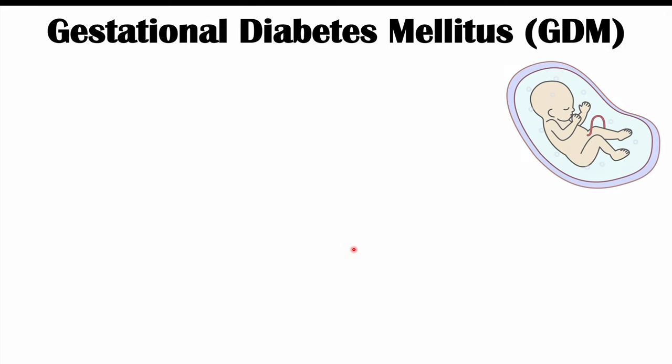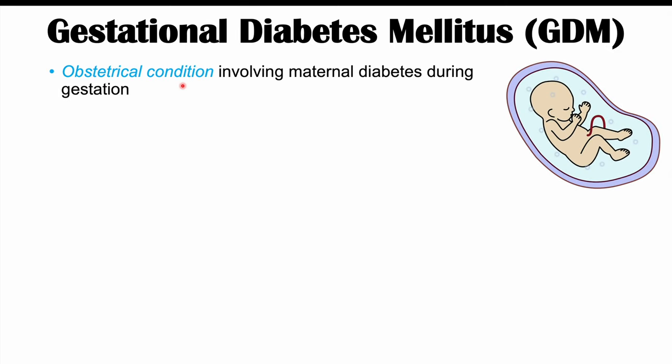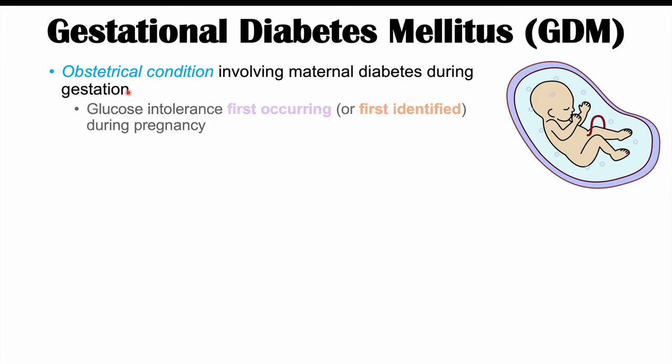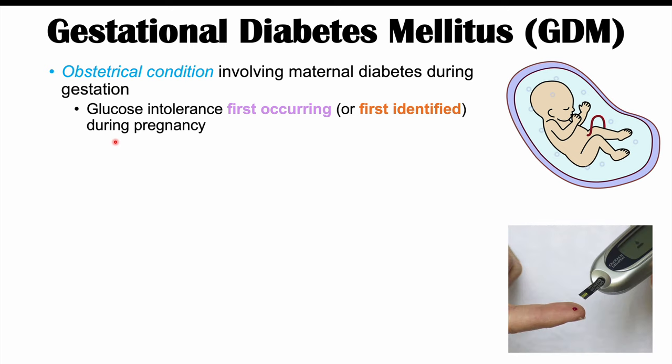Gestational diabetes mellitus, or GDM, is an obstetrical condition involving maternal diabetes during gestation. It's glucose intolerance that first occurs or is first identified during pregnancy. The patient may have been diabetic before pregnancy and didn't know it, but during screening in pregnancy, they may be first identified at that point. That would be considered gestational diabetes.